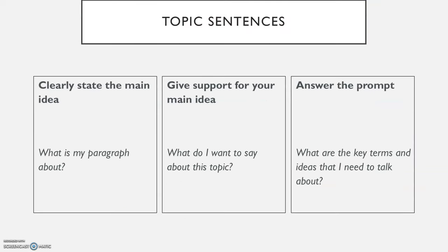To review, there are three main things to think about for a topic sentence. One, clearly state the main idea — what is my paragraph about? Two, give support for your main idea — what do I want to say about this topic, what's my opinion? And three, for writing class, answer the prompt completely — what are the key terms and ideas that I must talk about for this writing assignment? Thanks everybody. I hope this was helpful. See you soon.